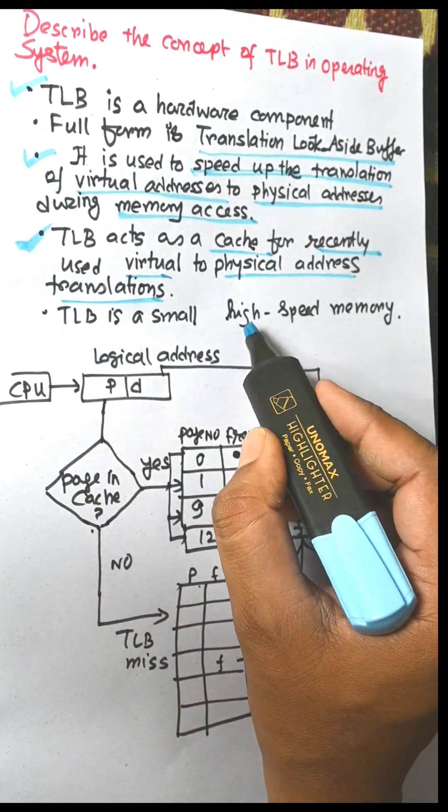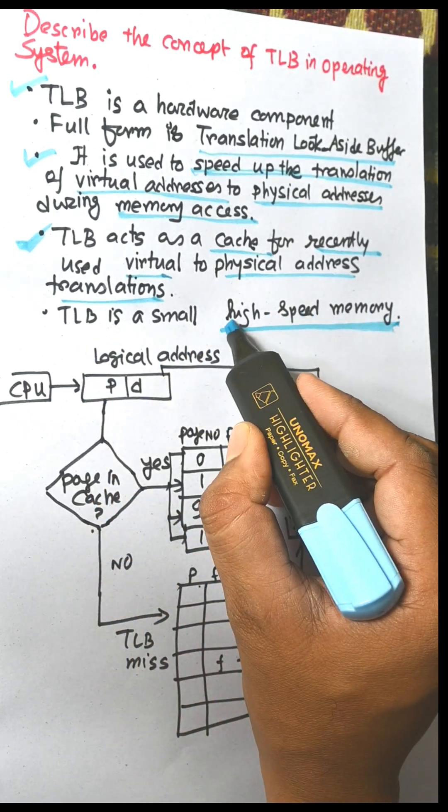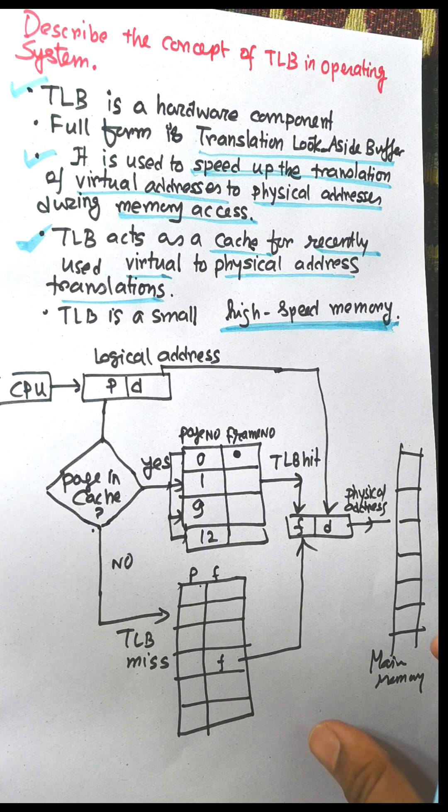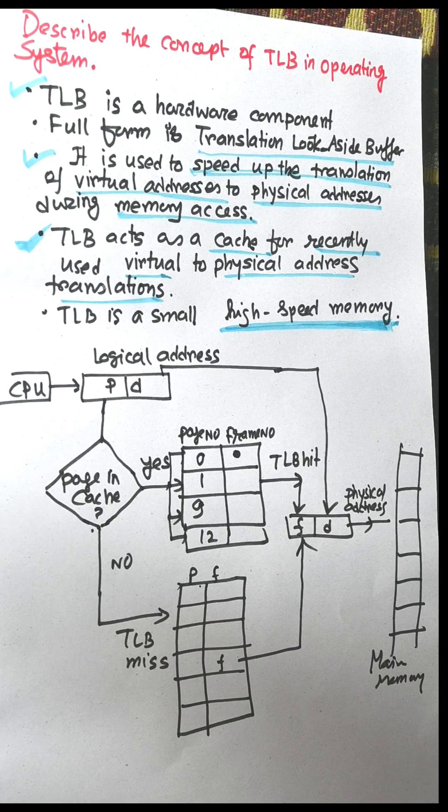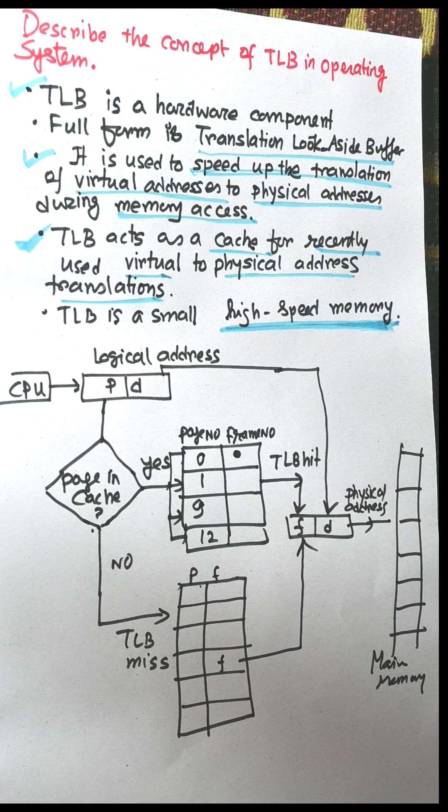TLB is a small and very high speed memory. This is the main advantage of TLB, it is very high speed memory. So it improves the efficiency of memory access during paging.